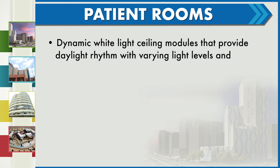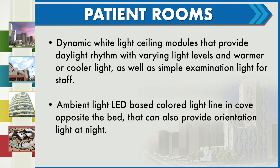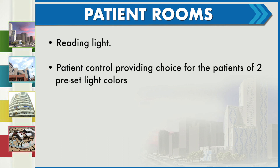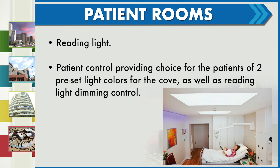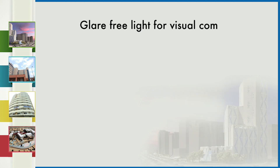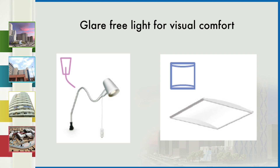Patient rooms. Dynamic white light ceiling modules provide daylight rhythm with varying light levels and warmer or cooler light, as well as simple examination light for staff. LED-based coloured light line in cove opposite the bed can also provide orientation light at night. Patient control provides choice for patients to preset light colours for the cove, as well as reading light dimming controls, as seen in the slides on screen. Glare-free light is provided for visual comfort.